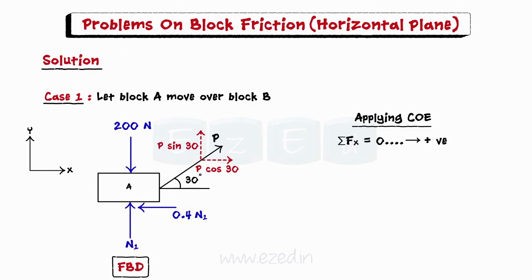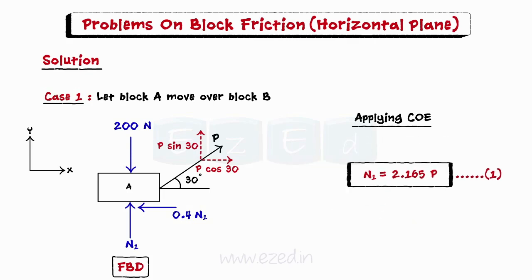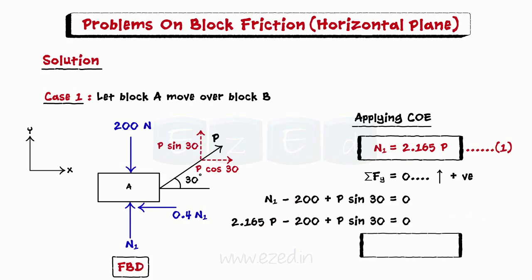Now we will apply the conditions of equilibrium to block A. We will first equate the summation of all forces in the x direction to 0, finding a relation between the normal reaction N1 and the applied force. Then we equate the summation of all forces in the y direction to 0. On substituting the values and simplifying, we find that the magnitude of applied force P in this case should be equal to 75.05 N.